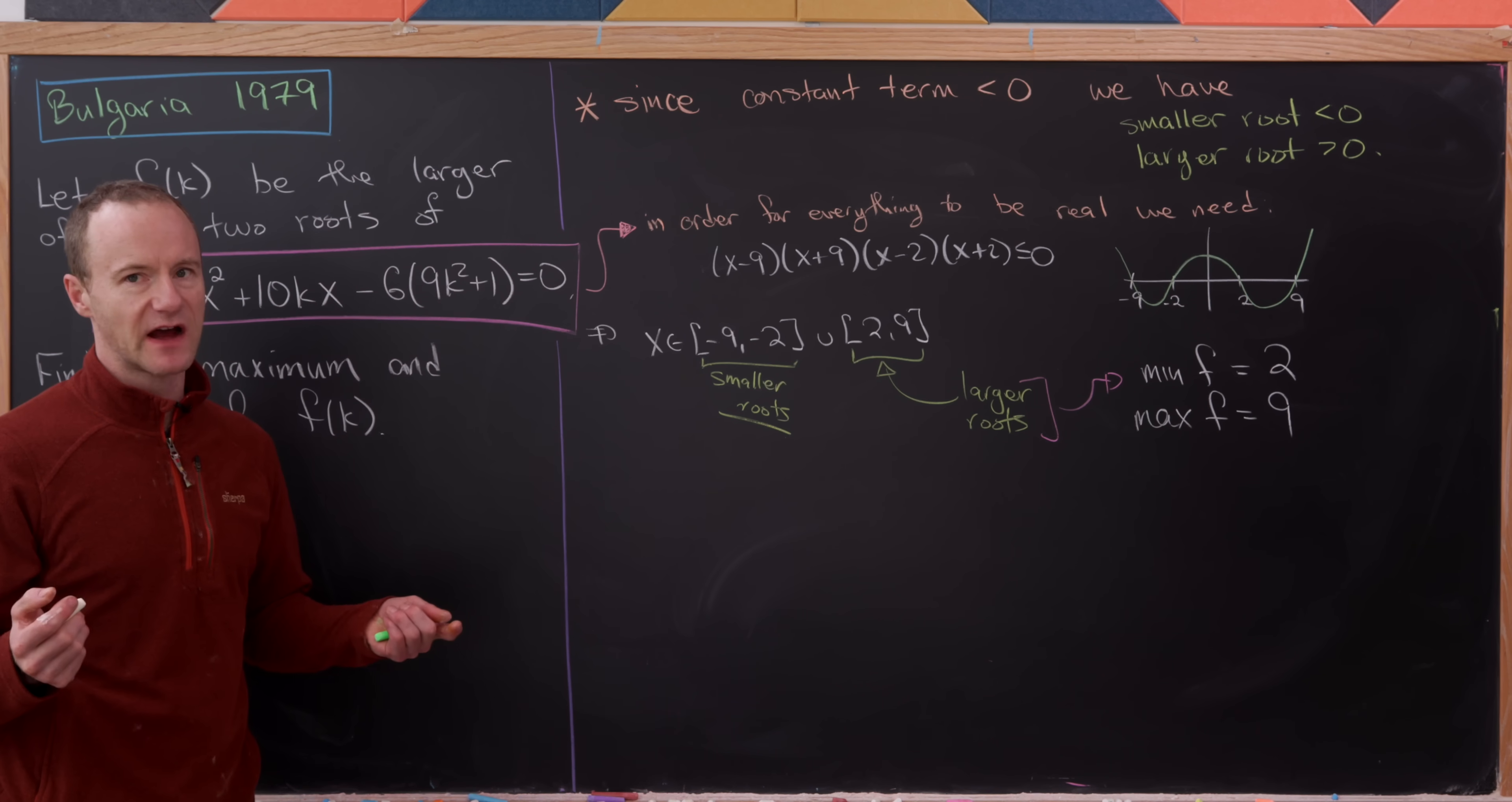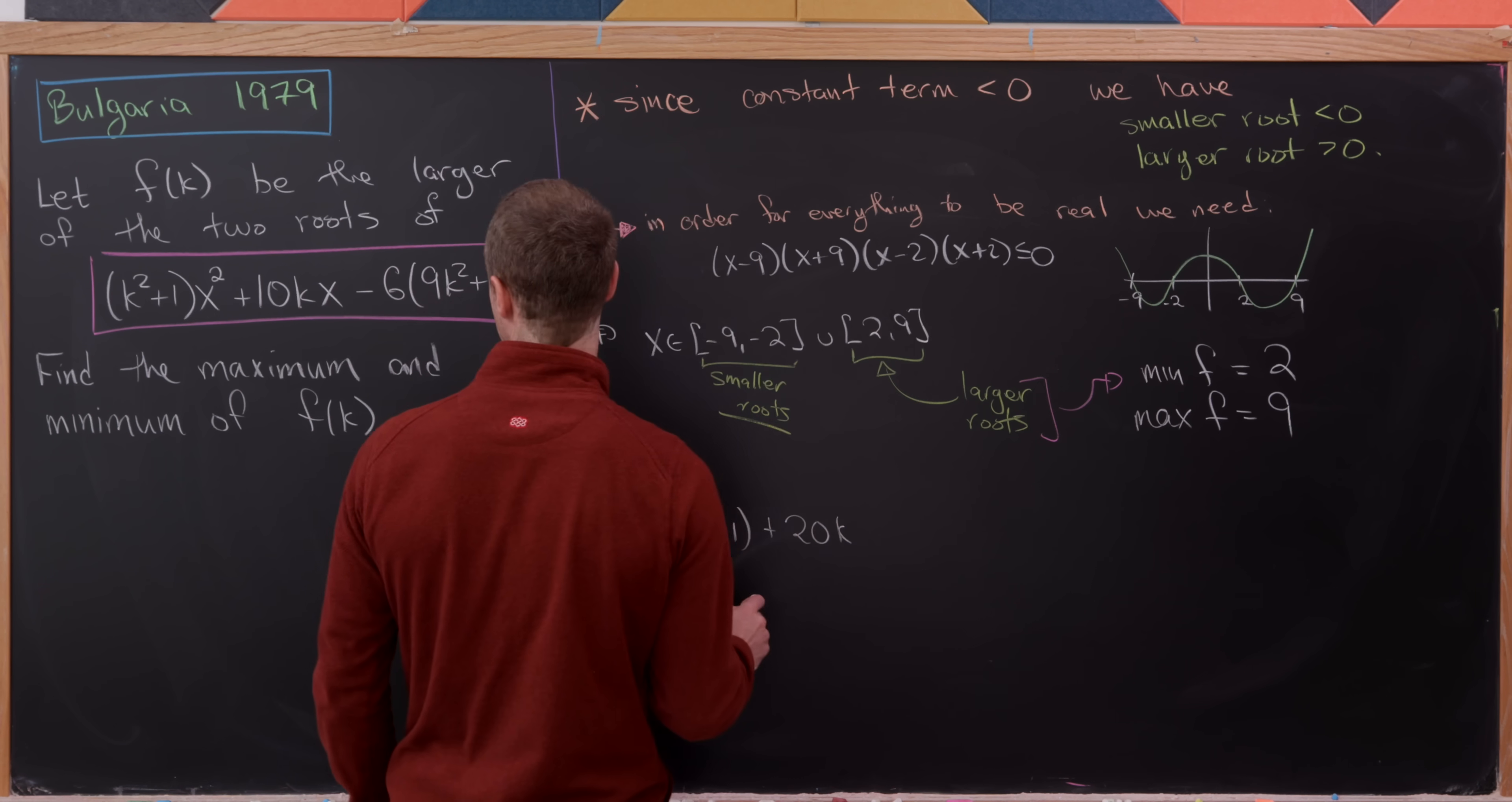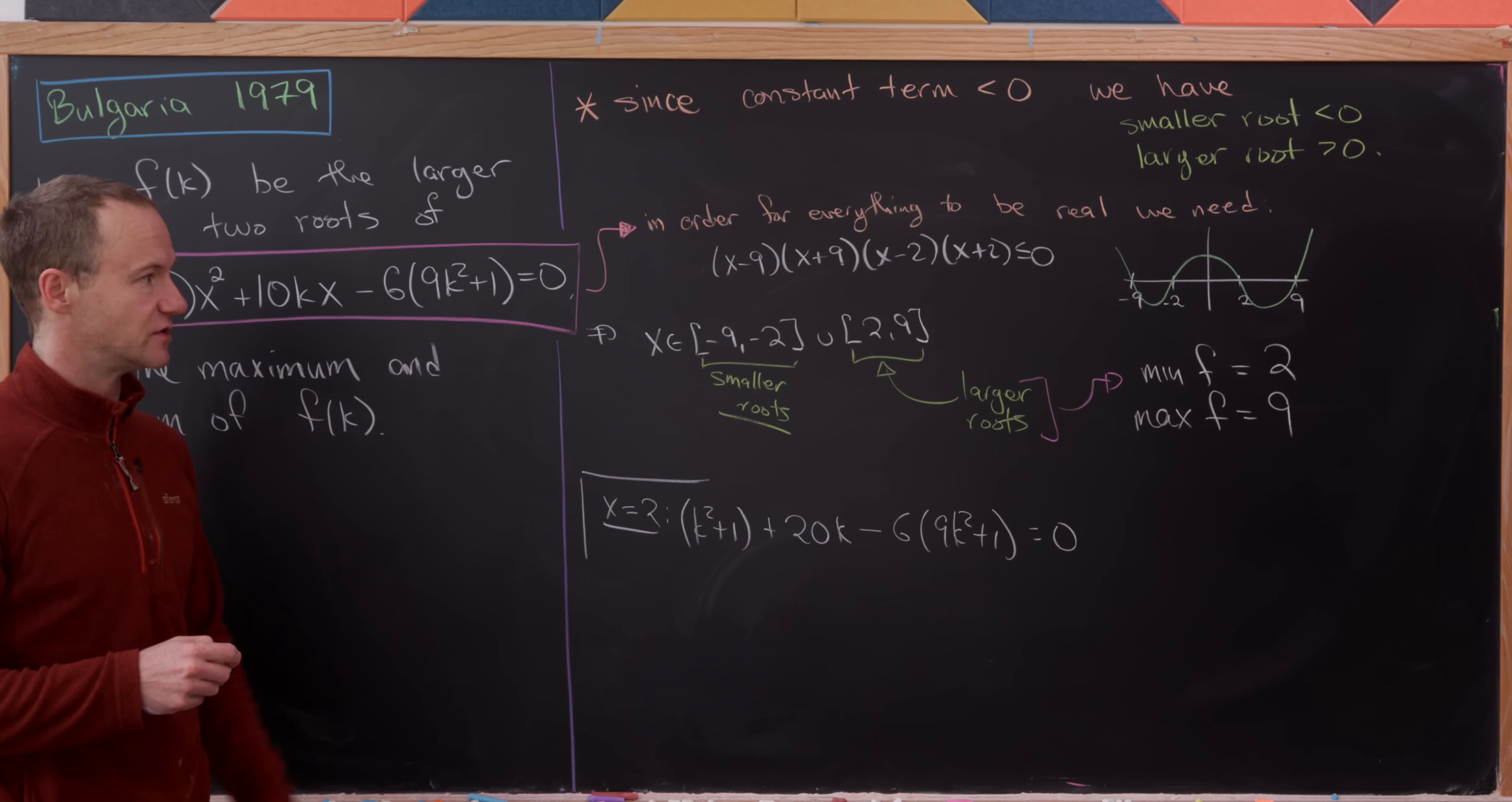That being said, if we wanted to find the values of k that correspond to these maximum and minimum values of f, let's do that. Plug in x = 2, corresponding to the minimum value of f. We'll have (k² + 1) + 20k - 6(9k² + 1) = 0. That gives us a quadratic equation in k that's guaranteed to have a real root by our construction. That gives us two values of k that correspond to the minimum value of f.